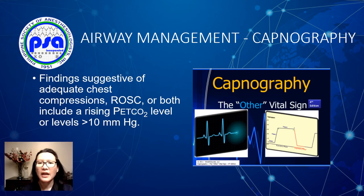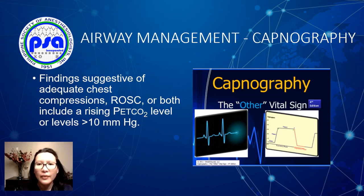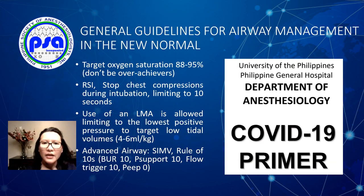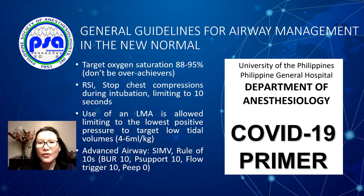Continuous capnography should be used if available to assess correct placement of the endotracheal tube. It can also aid in assessing the quality of chest compressions and suggest return of spontaneous circulation, which shows as a rising end-tidal CO2 pressure sustained above 10 with ROSC or with effective chest compressions.